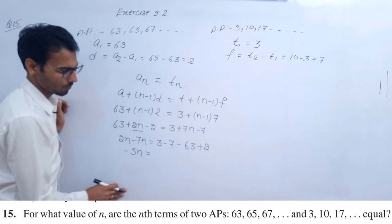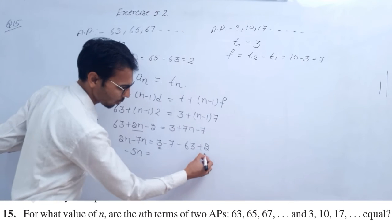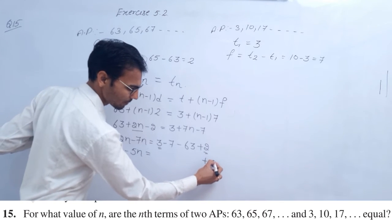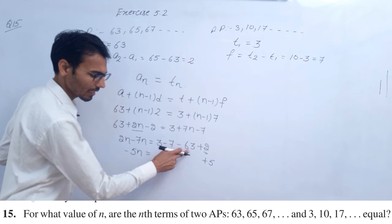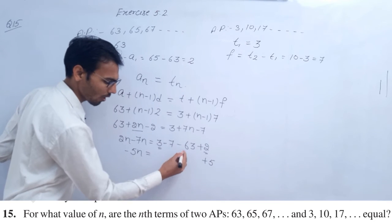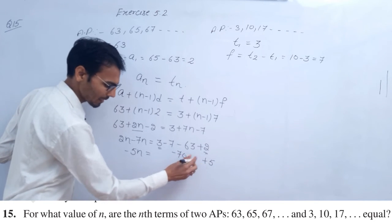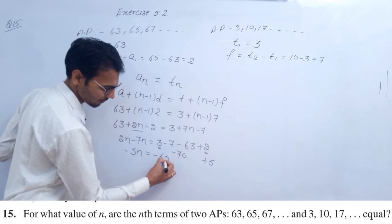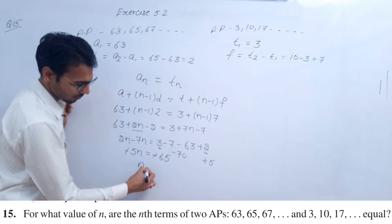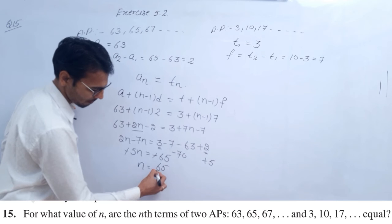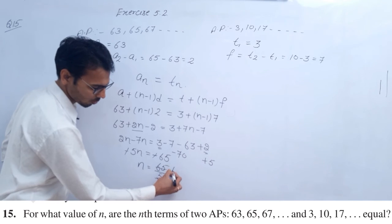Minus 5n equals 3 plus 2 is 5, minus 7 minus 63 gives minus 70, so minus 5n equals minus 65. Therefore n equals 65 divided by 5, which is 13.